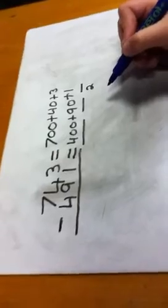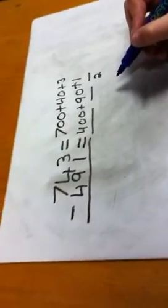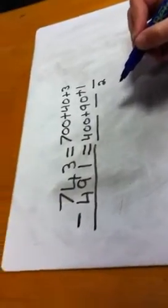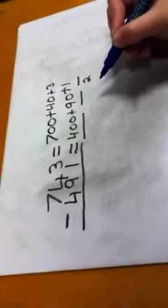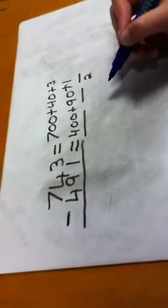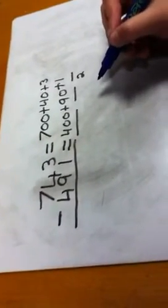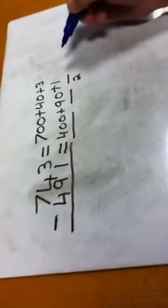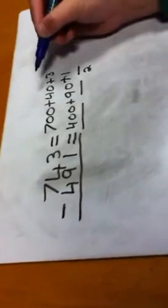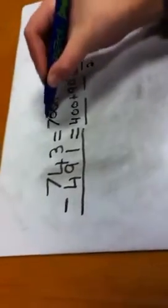Then you go on to 40 subtract 90, but you can't do it because it will end up as a negative number. So you would exchange 100 from the 700.